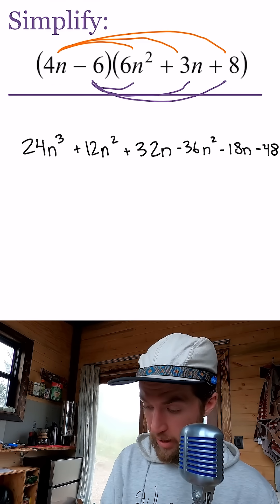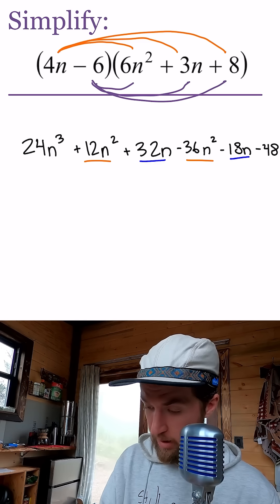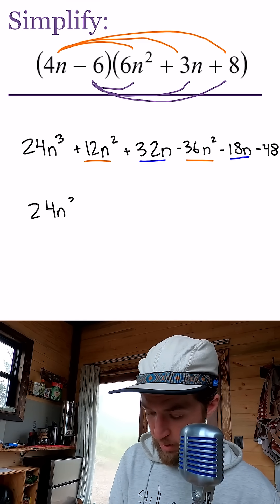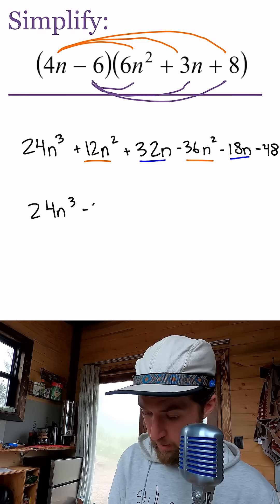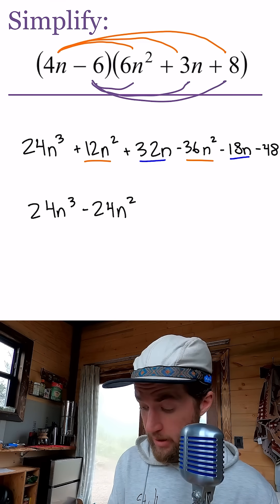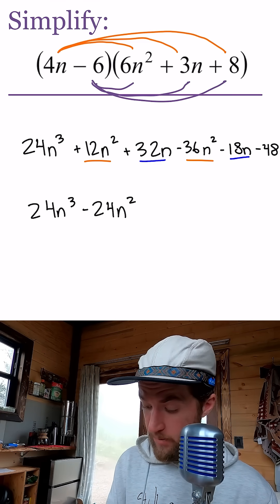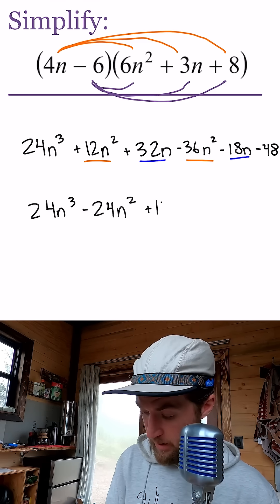So now we will combine like terms. I see n² terms there and n terms there. Let's go ahead and combine: 24n³ minus 24n²—that's 12n² minus 36n²—and then 32n minus 18n is 14n.